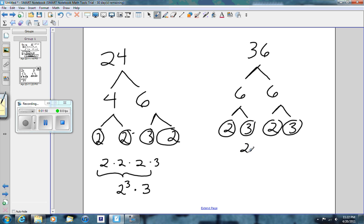Prime factorization for this one is 2 times 2 times 3 times 3. A quick check: 2 times 2 is 4, times 3 is 12, times 3 is 36. And again, these can be shortened up to 2 squared times 3 squared.